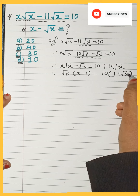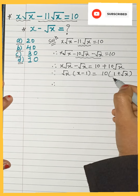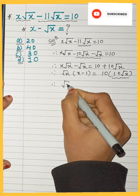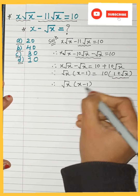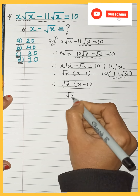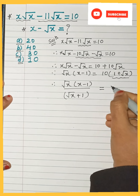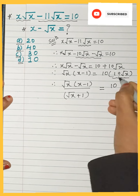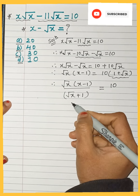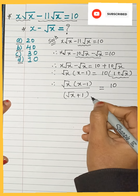Now we shift (1 + √x) to the denominator. So we have √x(x − 1) divided by (√x + 1) equal to 10. I have shifted that bracket to the denominator.